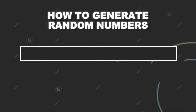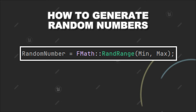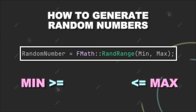The first way to generate random numbers is with fMathRandRange. As you can imagine based on the name, you can provide a range for the random number generation. You have to pass in the minimum and then the maximum of that range, and then this method will generate random numbers that are greater or equal to the minimum value and less or equal to the maximum value.